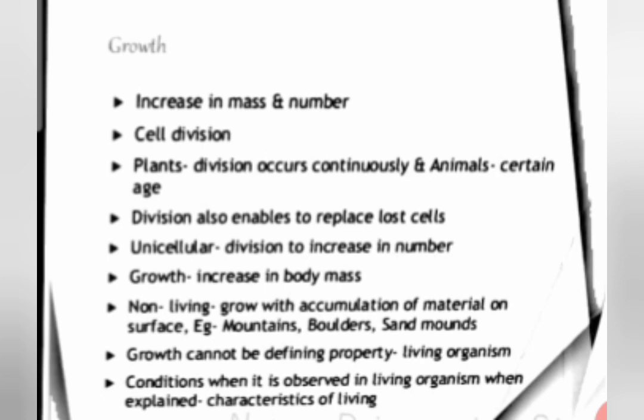Unicellular organisms can grow by dividing their cells and increasing their number. For example, bacteria multiply their number, which is called growth. So growth is synonymous with reproduction in the case of unicellular organisms. Growth also occurs as increase in body mass, which occurs in multicellular organisms. But in some non-living things, growth also occurs.